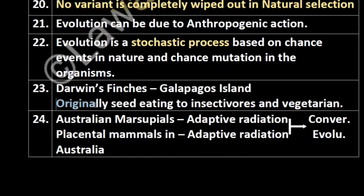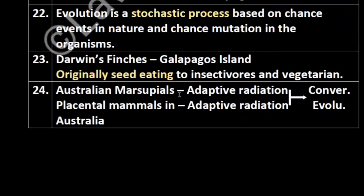Darwin's finches came from the Galapagos Islands — this is frequently asked. Originally they were seed-eating, then they got converted to insectivorous and vegetarian varieties. Australian marsupials originated from a common ancestor and diversified according to their needs — that is known as adaptive radiation. Similarly, adaptive radiation occurred with placental mammals in Australia. But when we see both together, they are an example of convergent evolution.